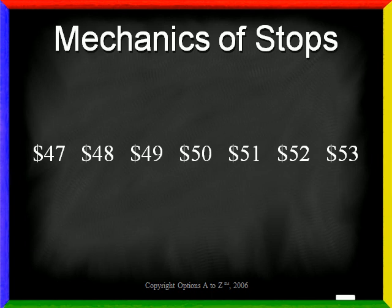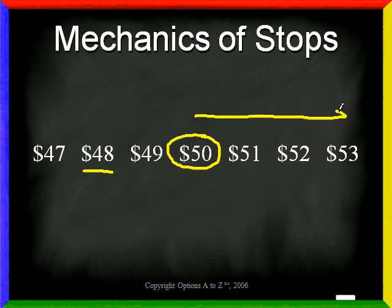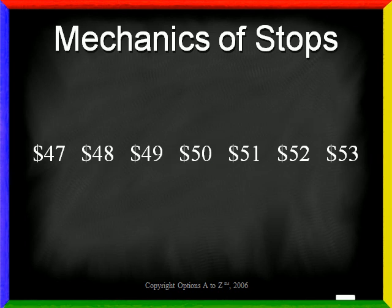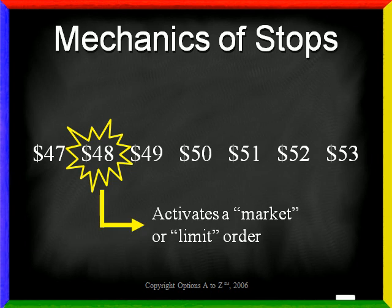Let's take a closer look at the mechanics of stops. Assume that you have purchased shares for $50 per share and you decide to place a stop order at a price of $48. If the stock price continues higher then nothing will be done — you'll keep the shares and continue to profit. However if the stock price falls and trades at or below your stop price of $48, the order will be activated. At that point the computer submits a market order to sell if you placed a regular stop order, or it will place a limit order to sell if you placed a stop limit order.